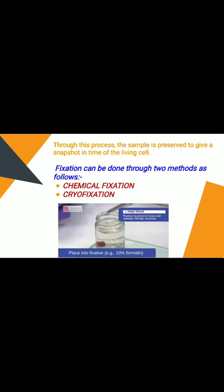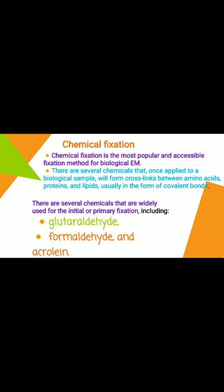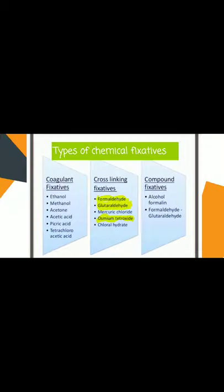Fixation can be done through two methods: chemical fixation and cryo-fixation. Chemical fixation is the most popular and accessible method for biological electron microscopy. Several chemicals, once applied to a biological sample, form cross-links between amino acids, proteins, and lipids, usually in the form of covalent bonding. Chemicals widely used for primary fixation include glutaraldehyde, formaldehyde, and acrolein — these are the major fixatives used in electron microscopy.